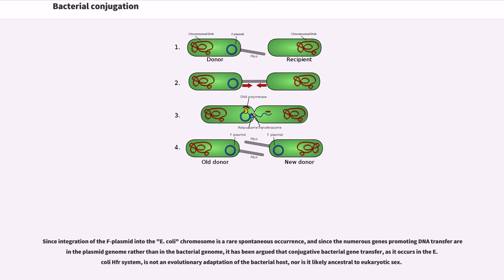Since integration of the F plasmid into the E. coli chromosome is a rare spontaneous occurrence, and since the numerous genes promoting DNA transfer are in the plasmid genome rather than in the bacterial genome, it has been argued that conjugative bacterial gene transfer, as it occurs in the E. coli Hfr system, is not an evolutionary adaptation of the bacterial host, nor is it likely ancestral to eukaryotic sex.